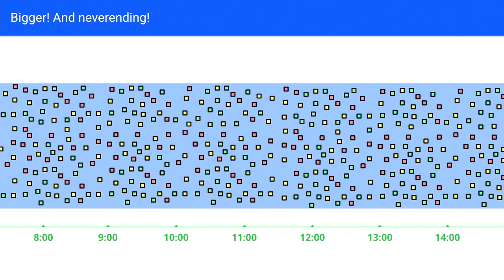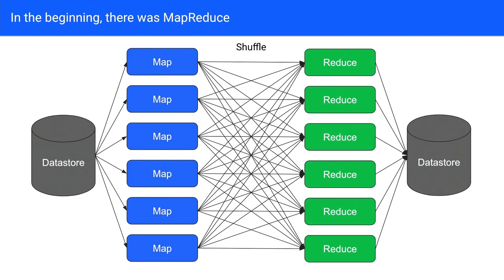In order to address the growing data needs, the first main tool that the larger world coalesced on was MapReduce — maybe not the first, but one of the biggest certainly. The idea behind MapReduce was pretty simple: if you want to distribute computation, you can do it with two sets of stages, a map and a reduce, where the map takes some set of data, pulls out characteristics, transforms it, and sends it to a set of machines where it can be reduced into a smaller data set.